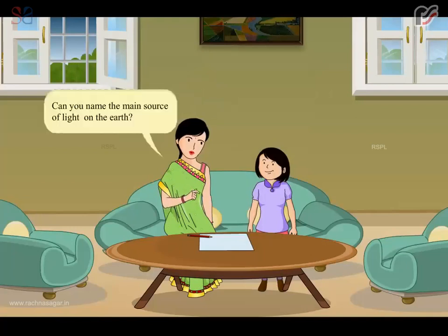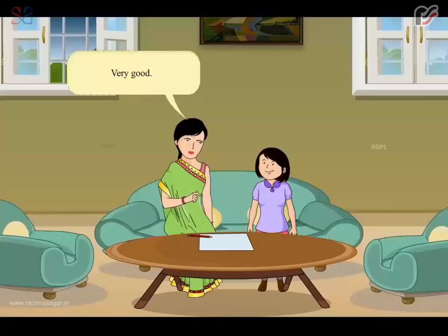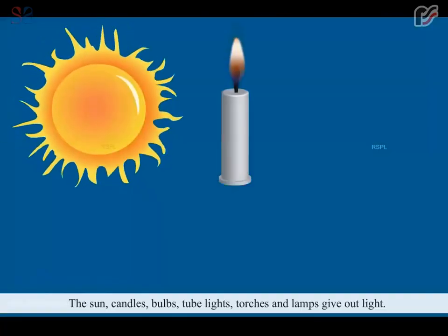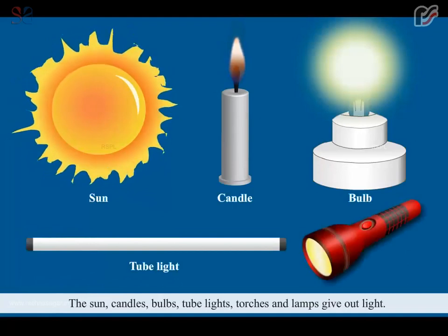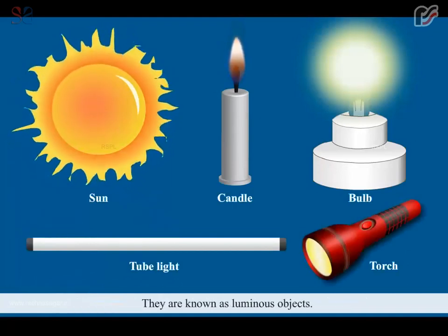Can you name the main source of light on the Earth? It's the Sun. Very good. The Sun, candles, bulbs, tube lights, torches and lamps give out light. They are known as luminous objects.